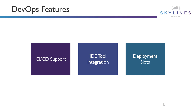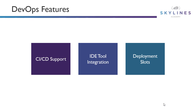App Service also has a unique feature called Deployment Slots, which allow us to stage environments. We can basically have a stage environment and a prod environment, deploy to stage and then flip it into prod. You'll hear more about that later on in the course.